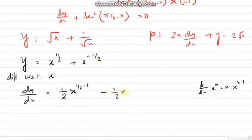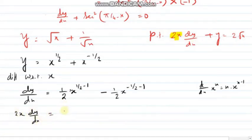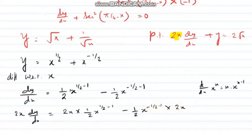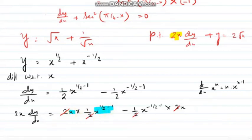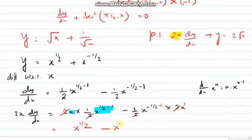So dy/dx = (1/2)x^(half minus 1) plus (minus 1/2)x^(minus half minus 1). In the proof, we need 2x times dy/dx. Multiplying by 2x: 2x·dy/dx = 2x·(1/2)x^(−1/2) minus 2x·(1/2)x^(−3/2). The 2s cancel. Then x·x^(−1/2) = x^(1/2), and x·x^(−3/2) = x^(−1/2). So 2x·dy/dx = x^(1/2) minus x^(−1/2).